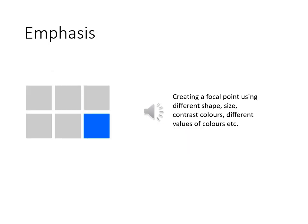The next principle of design is emphasis. I have been telling you to create a focal point in your composition. You can create a focal point using a different shape — for example, if using all triangles, introduce a pentagon or circle. You can also differentiate size, such as placing a very large triangle at one point while everything else is smaller, or use colors and various values of colors to create emphasis.